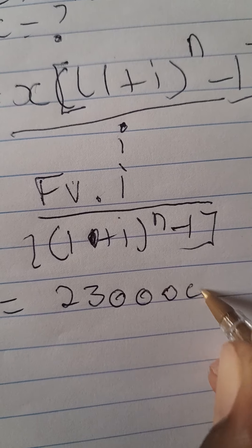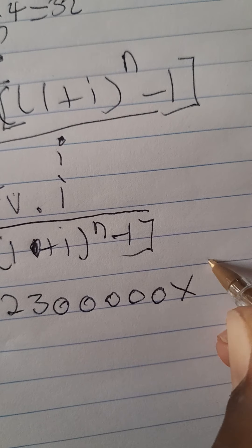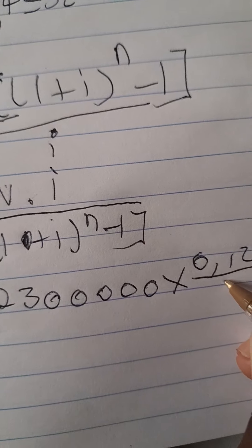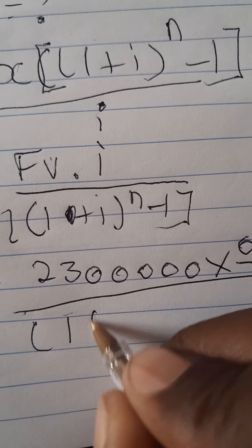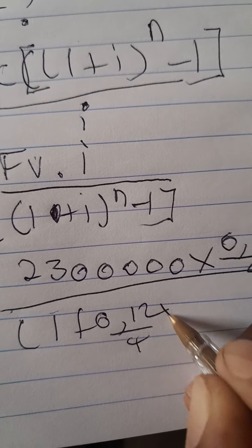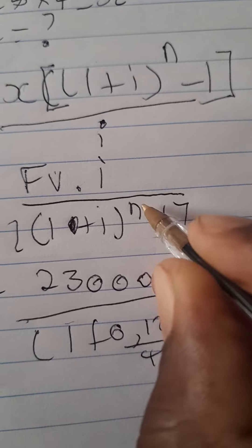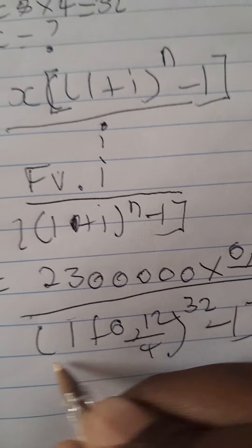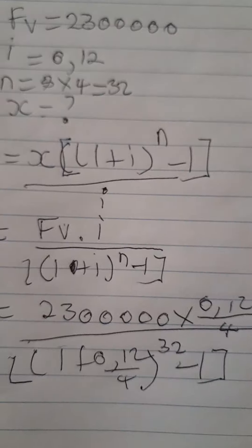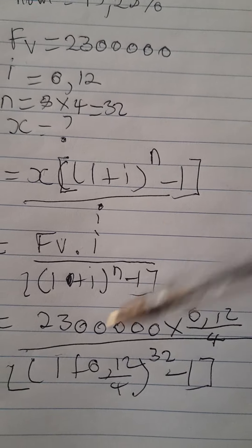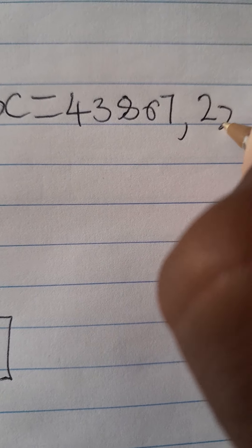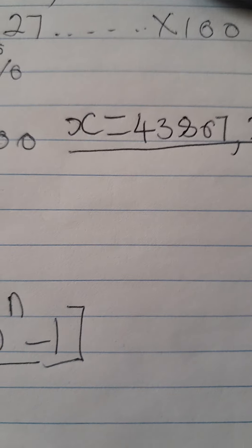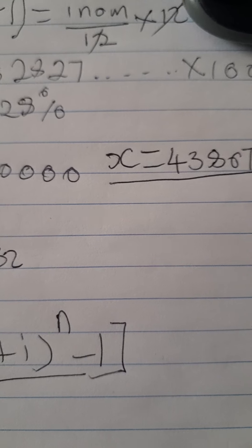Plugging in the values: 2.3 million multiplied by 0.12 divided by 4 since it's compounded quarterly, then divided by the quantity 1 plus 0.12 divided by 4, to the power of 32, minus 1. Punching this into the calculator, x equals R43,807.22. That's how you work with 7.2. Now we focus on 7.3.